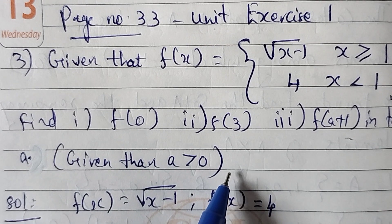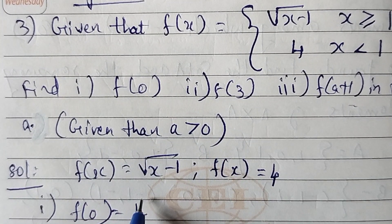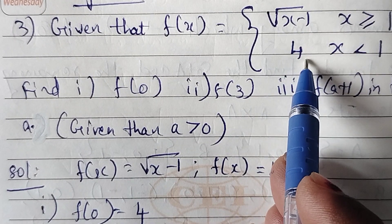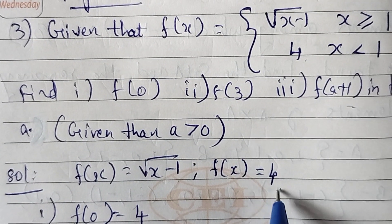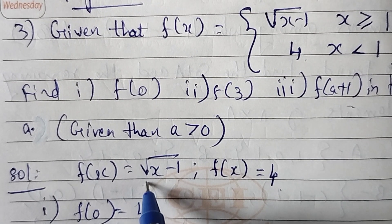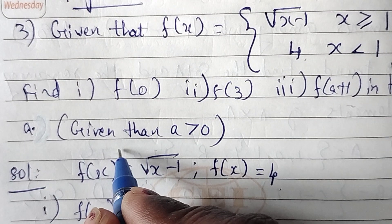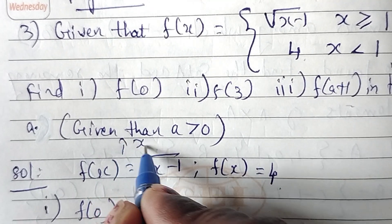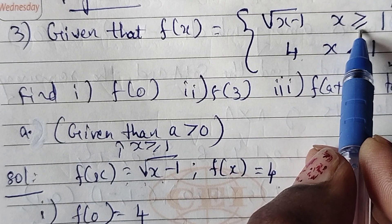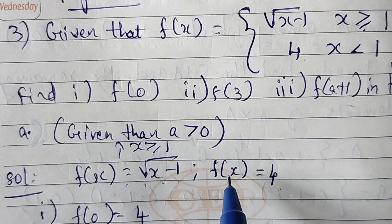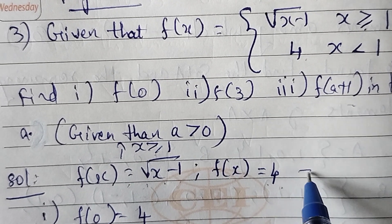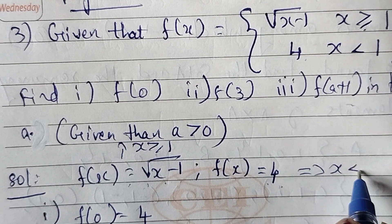Solution: f of x equals square root of x minus 1 when x is greater than or equal to 1, and f of x equals 4 when x is less than 1.